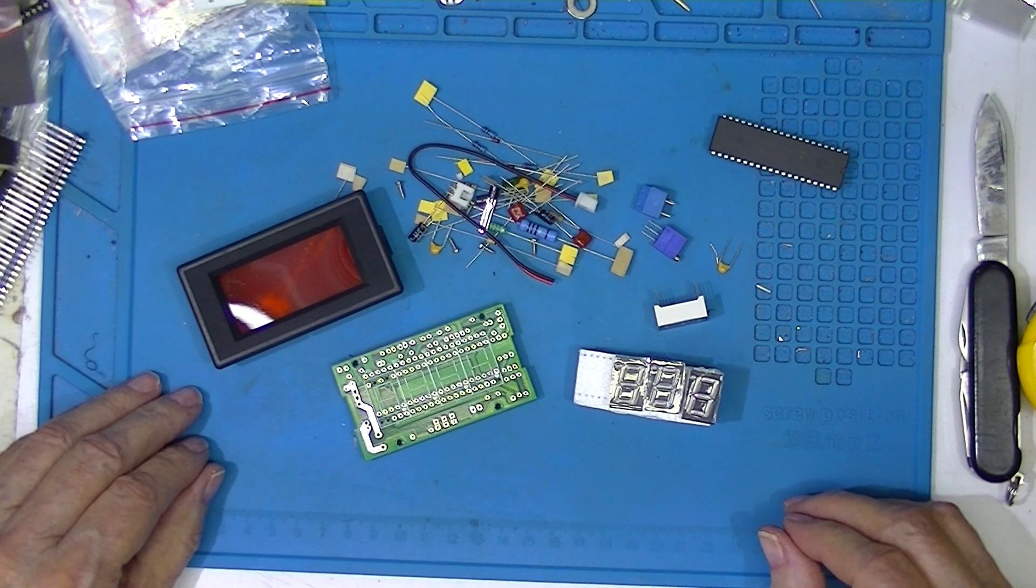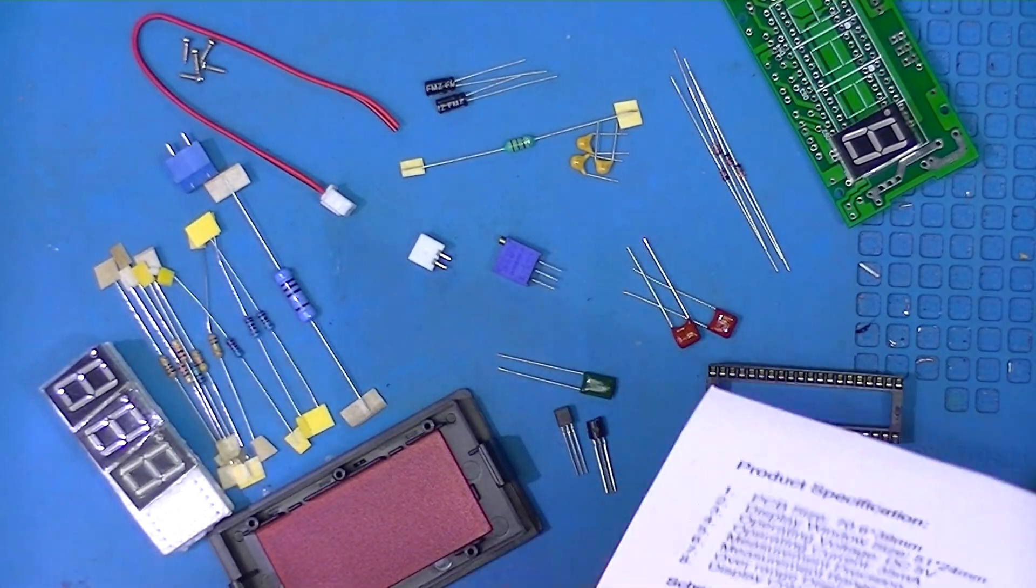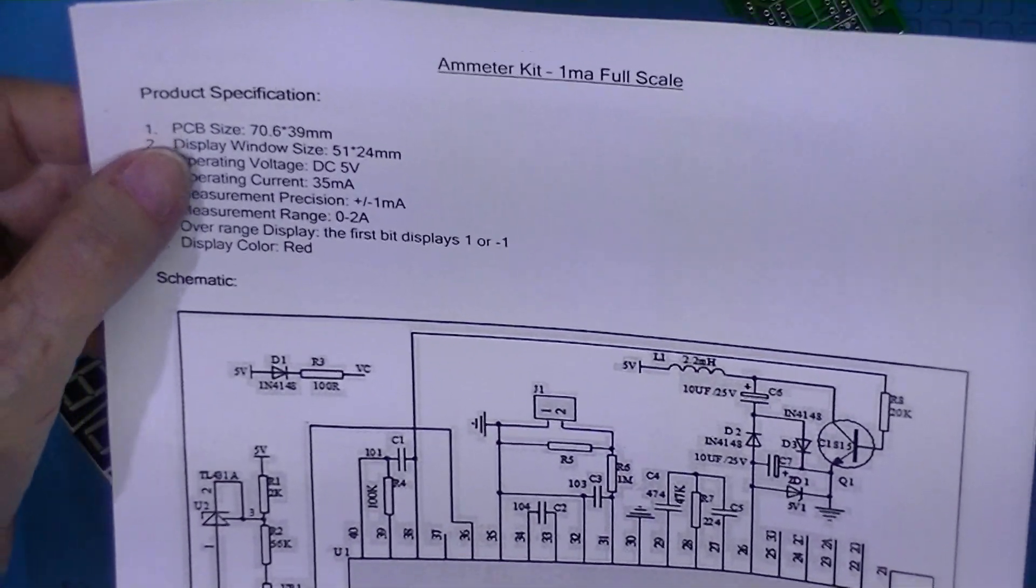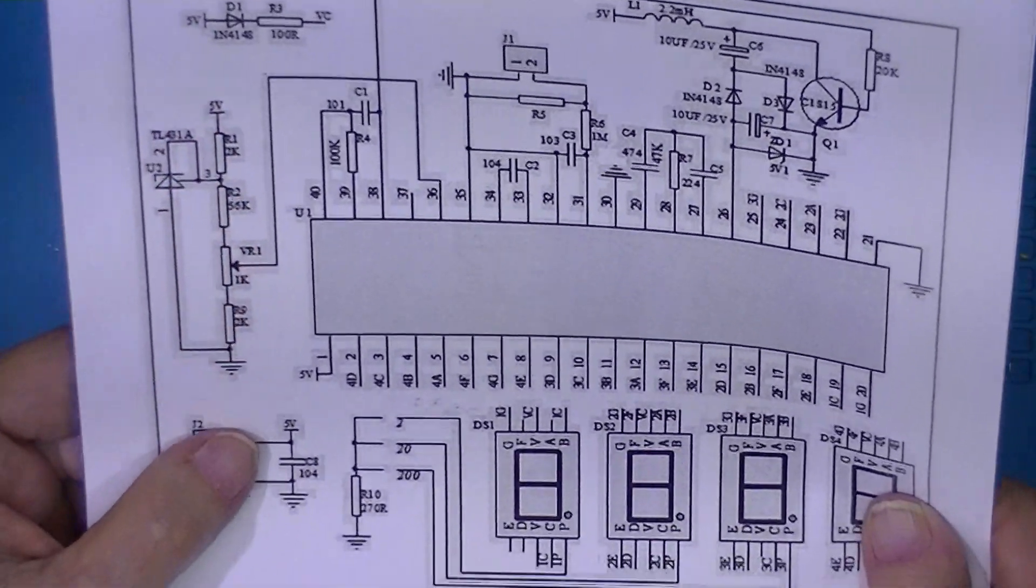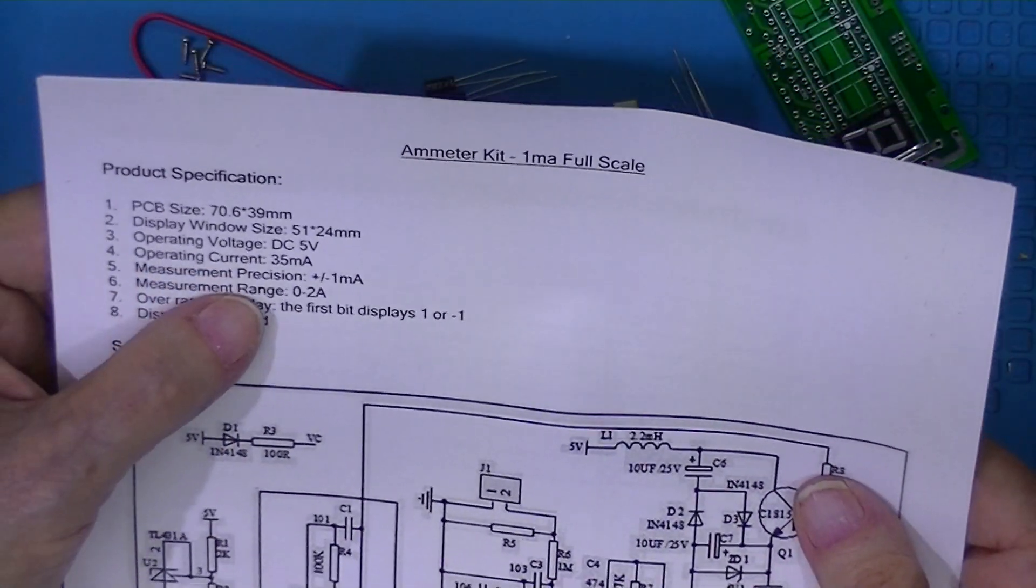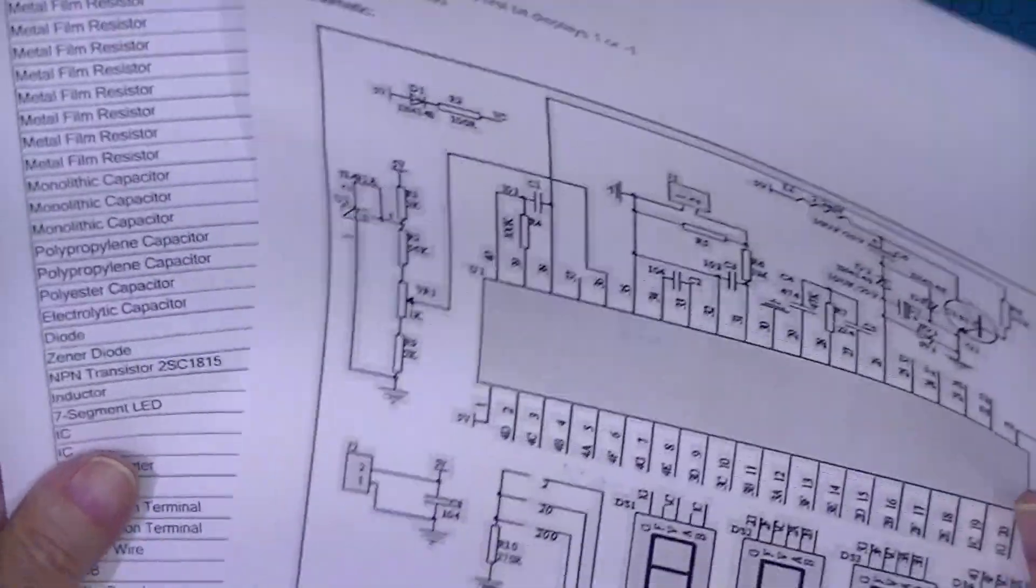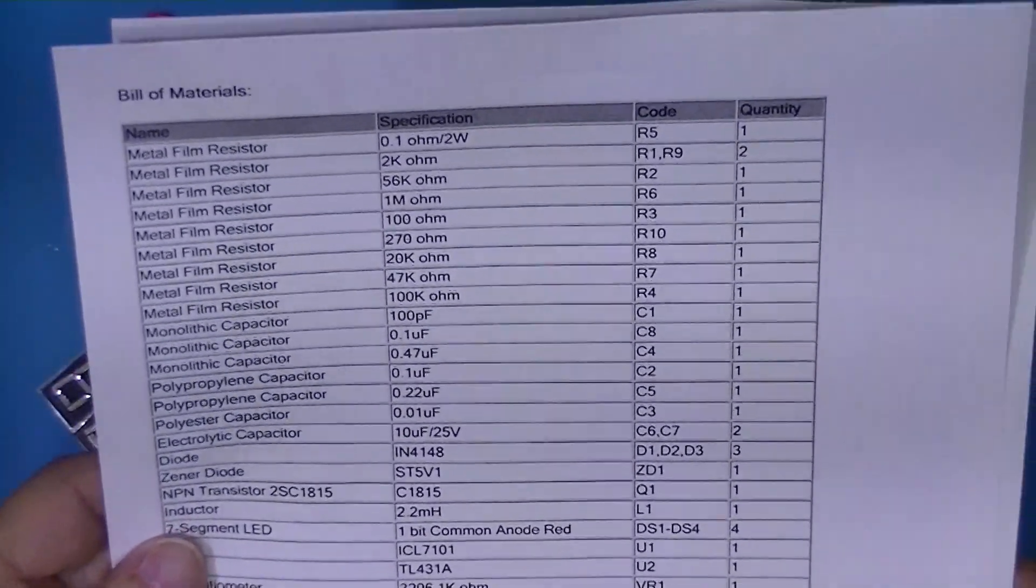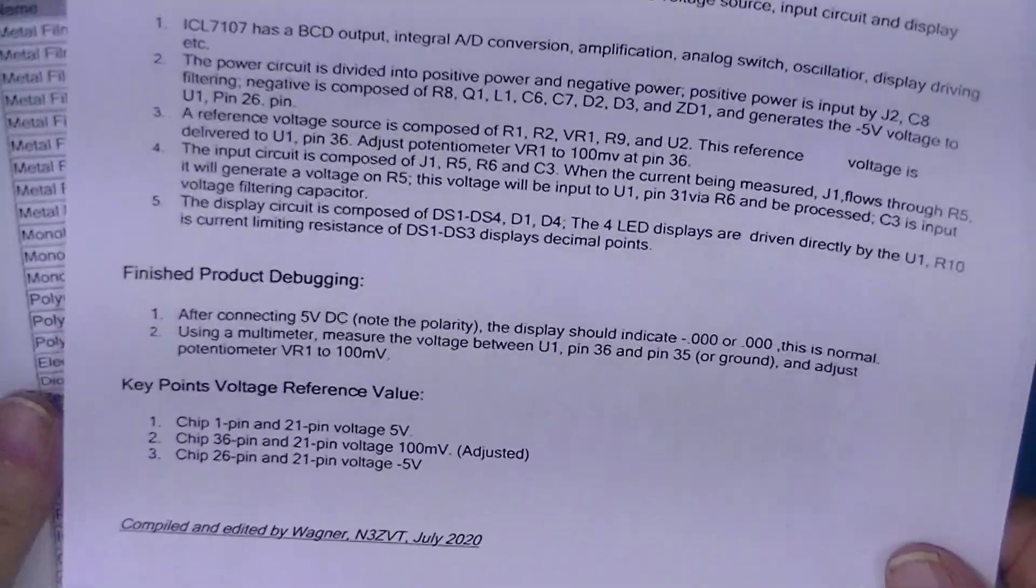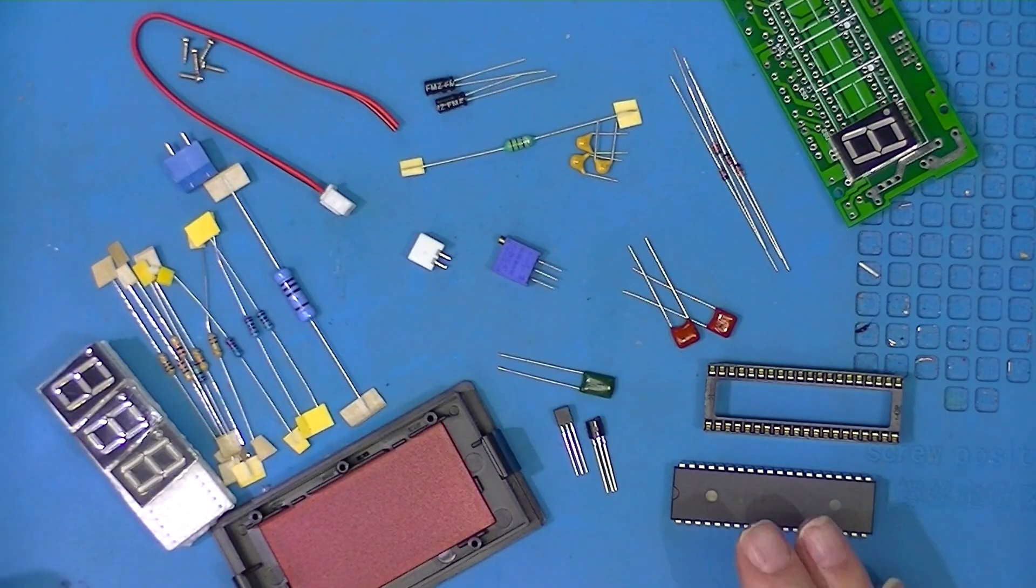I did a little research on the web and found and put together this information about the ammeter kit. There was a schematic I was able to find. It's going to be zero to two amps. Then I found the bill of materials. Everything here is pretty clear.